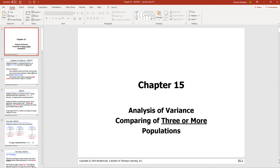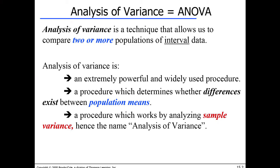In this lecture we're going to start and finish a new topic. We'll discuss a powerful test which allows you to compare several populations together simultaneously in one quick test — and when I say several, I mean three or more populations. The name for this topic is Analysis of Variance, abbreviated ANOVA. The technique allows you to compare two or more populations of interval data, but the primary use is when you have three or more populations.